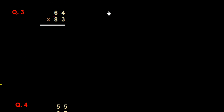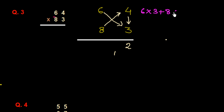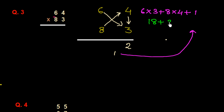We see one more example: we have to multiply 64 with 83. I write down 64 and 83 and draw a line. First we multiply the unit place vertically: 4 times 3 is 12. We write down 2 and carry 1. Then we multiply 6 with 3 and 8 with 4: 6 into 3 plus 8 into 4 plus carry 1. That is 18 plus 32 plus 1, which is 51.